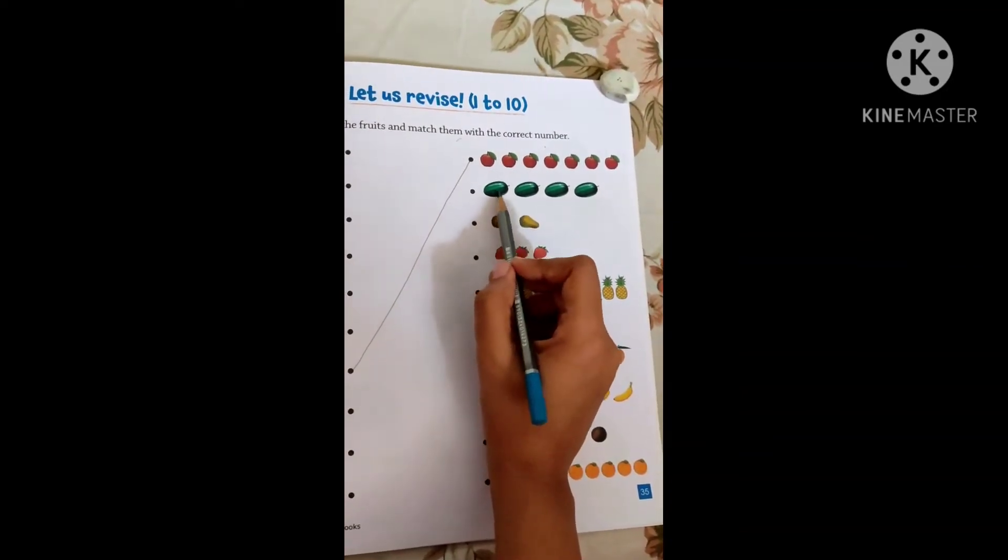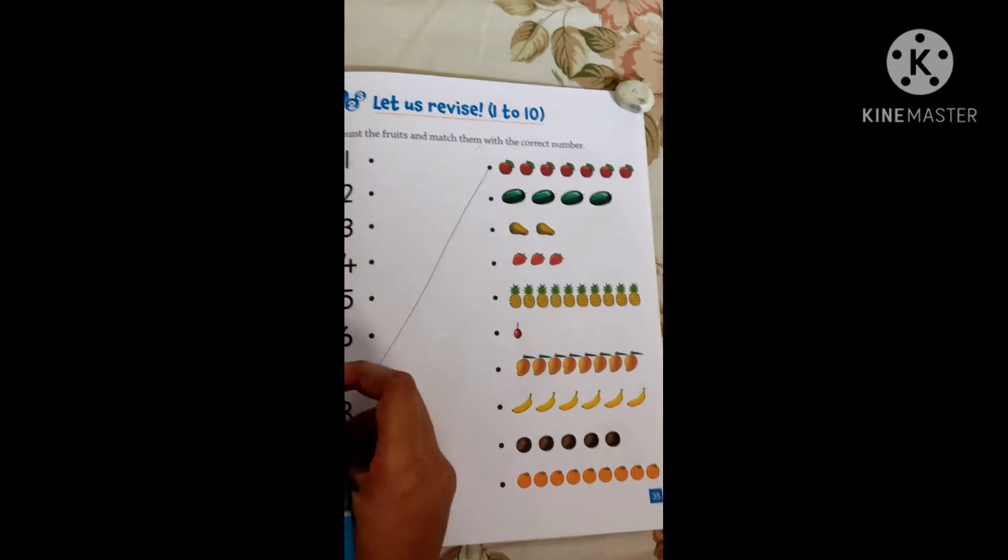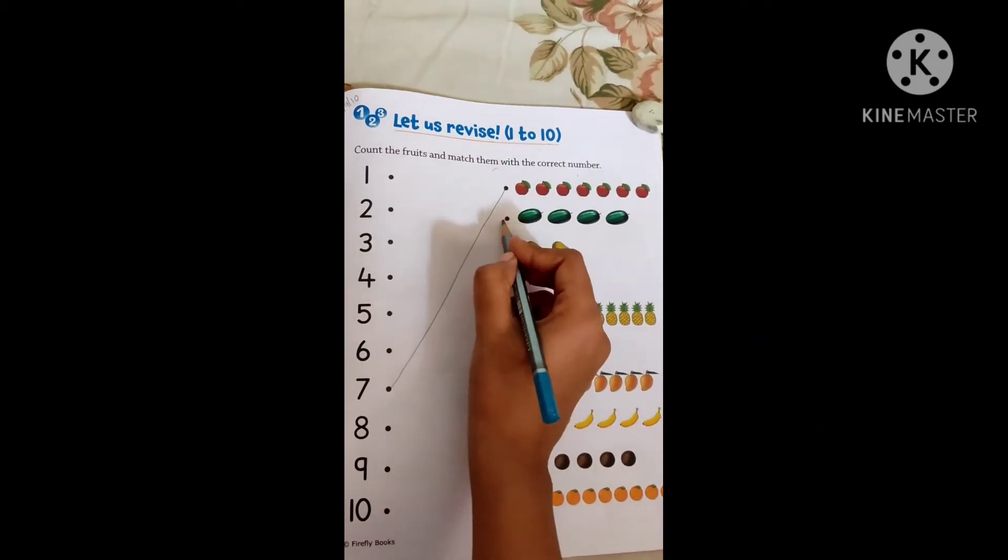Now watermelon. 1, 2, 3, 4. There is a 4 number over here. Very nice. Then match.